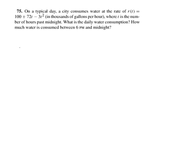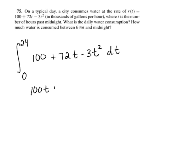The daily water consumption, if you know the rate, is just going to be the integral of that rate over a whole day, which is 24 hours. So we're going to integrate from 0 to 24, 100 + 72t - 3t² dt. And so this will be 100t + 72t²/2 - 3t³/3, evaluated from 0 to 24.